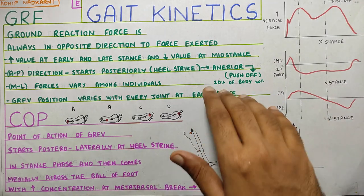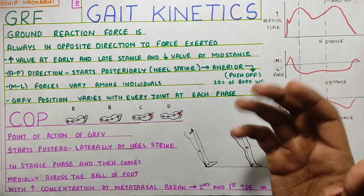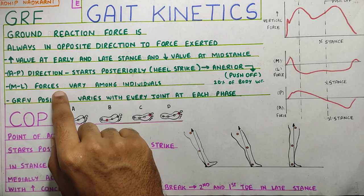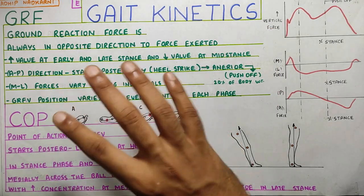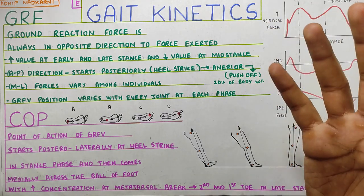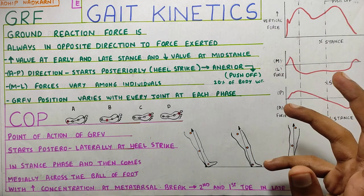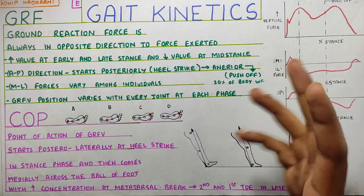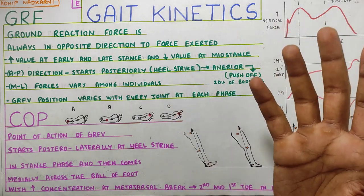The force exerted in the anterior-posterior direction is around 20% of your body weight. If you consider the medial-lateral direction, the forces will vary among individuals. There is no proper standard data as such, but a typical graph would start medially then go slightly lateral — though again, it will vary from person to person.